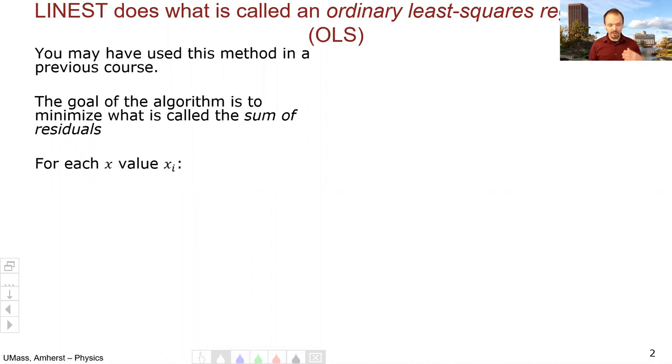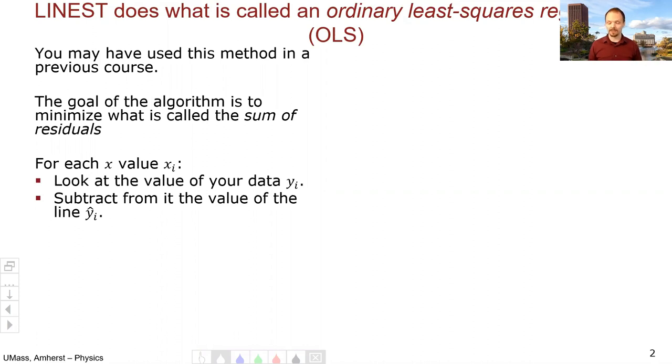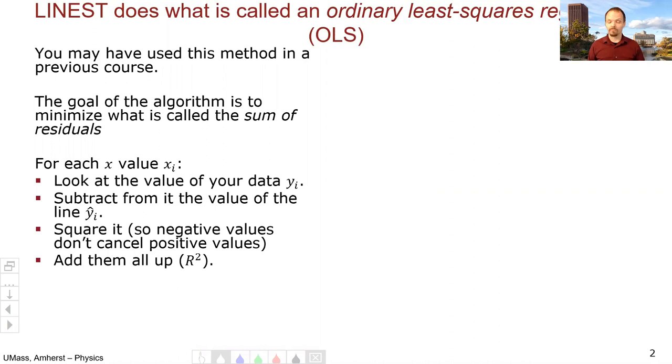It means for each x value, xi, xi represents your various data points, you look at the value of your data, yi, and then subtract it from the value of your line. So you have a fit line and you subtract the fit for that y minus the y of your data. You square it, that way, negative values and positive values don't cancel out. You want these things to add up always. And then you add them all up. That's the sum of the residuals. So we put a square to remind us that we've squared everything. And then minimize that quantity. So mathematically, it looks like this.